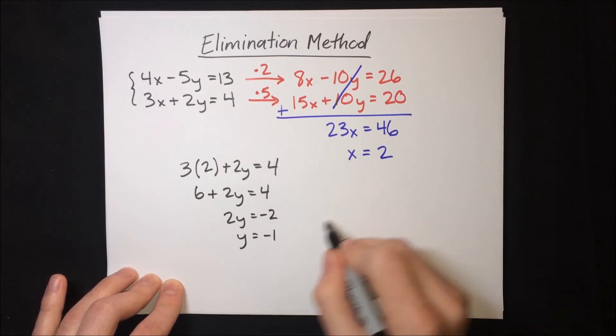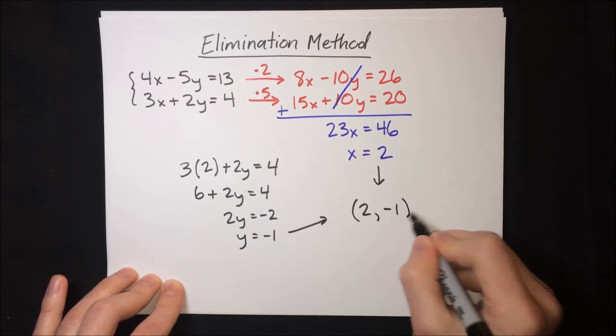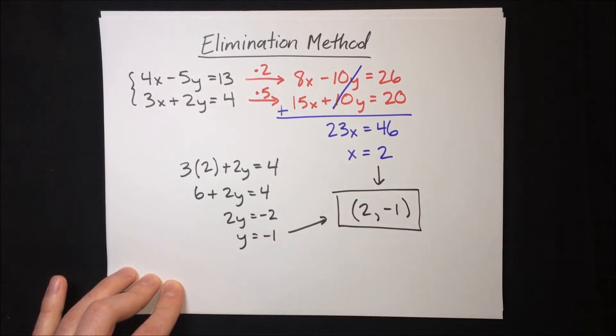Great. We're done. Our final solution then is x equals 2 and y equals negative 1. The point 2, negative 1.